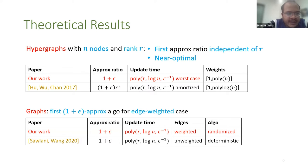Now let me come to our results. For hypergraphs with N nodes and rank R, we give the first approximation algorithm where the approximation ratio is independent of R. To be precise, we give a near-optimal (1 + ε) approximation in poly logarithmic update time. We can handle weights as large as polynomial in the number of nodes N. Compare this with the state of the art by Hu and Chen in 2017, who gave a (1 + ε) × R² approximation in the same update time, but their update time was amortized. Ours is even better worst case. They could only handle small weights, which was polylog in N. If you look at graphs, that is rank two hypergraphs, this is the first (1 + ε) approximation algorithm for the edge-weighted case. The best-known previous work was by Sariani and Wong, who gave a deterministic polylog update time algorithm and got (1 + ε) approximation, but only for the unweighted case.